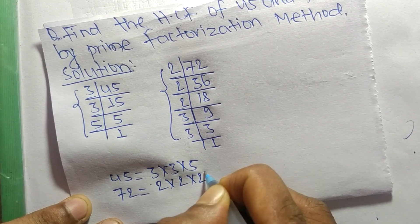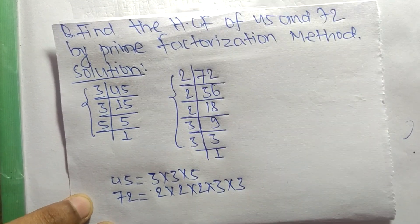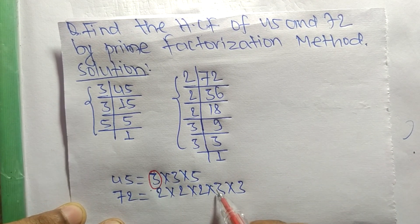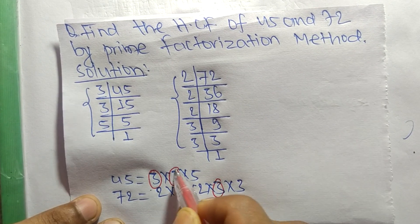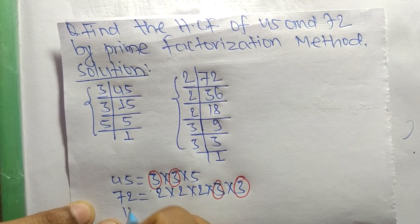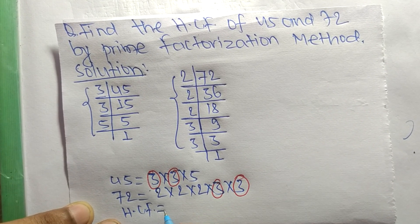Now we select the common factors in these prime factors. The common factors here are 3 and 3. So the HCF is equal to the product of common factors.